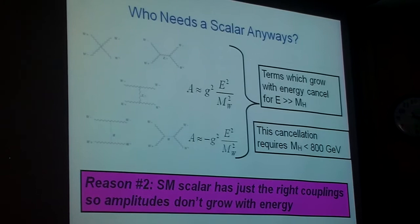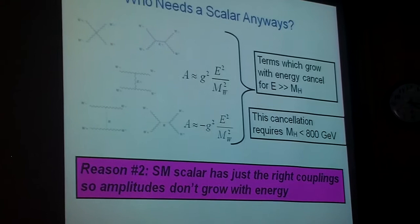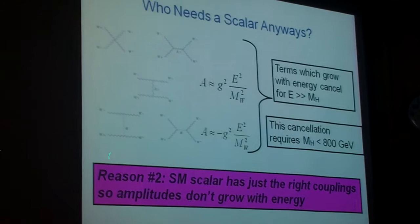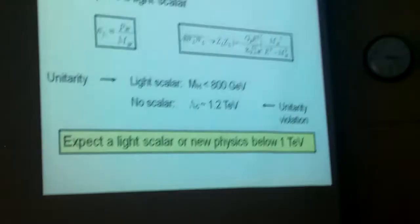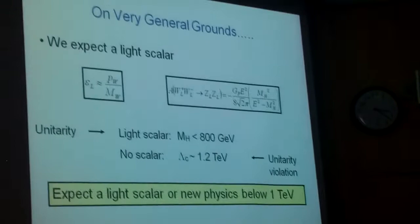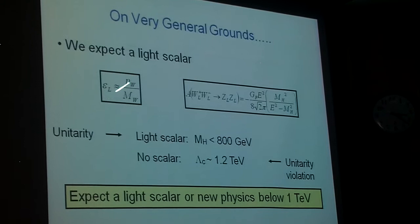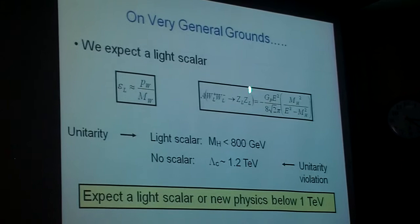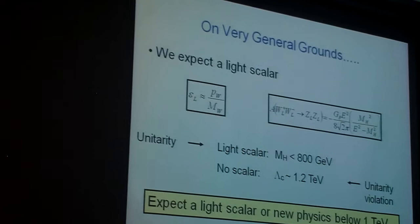So if I start messing around with my theory, adding new particles, new couplings here, I change this cancellation. So what does this mean? Well, on very general grounds, we expect that the scalar is relatively light. If I look at the polarization of these W particles, the polarization vector is just their energy over MW, so the scattering of the longitudinal gauge bosons has a piece which grows with energy and then a piece which is cut off by the scalar mass. So unitarity conservation, the conservation of probability, requires either that the scalar is relatively light, less than about 800 GeV.